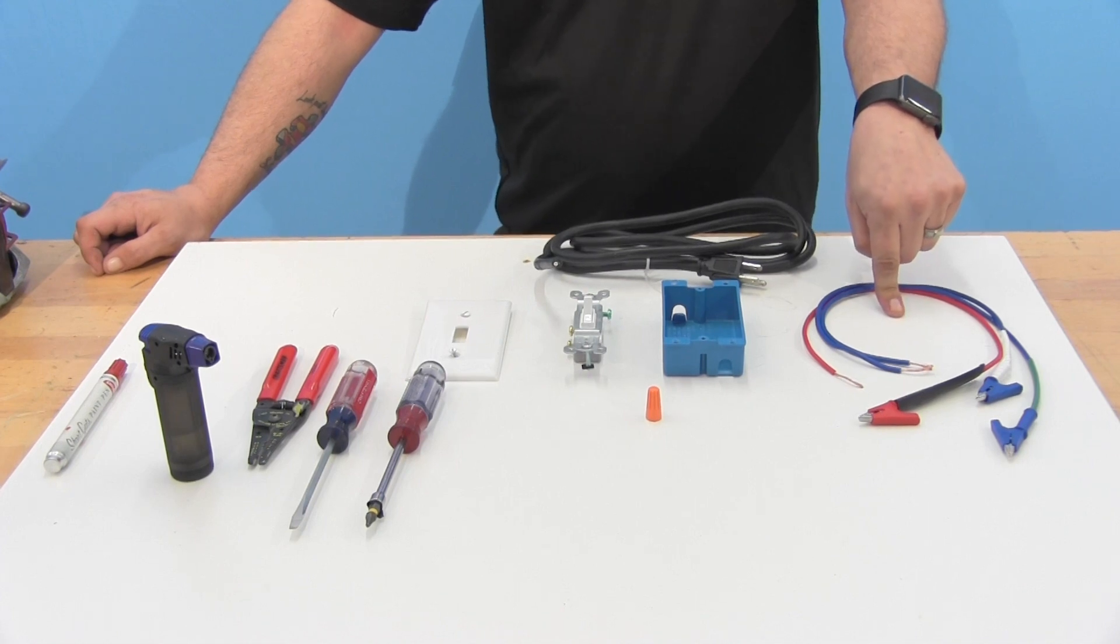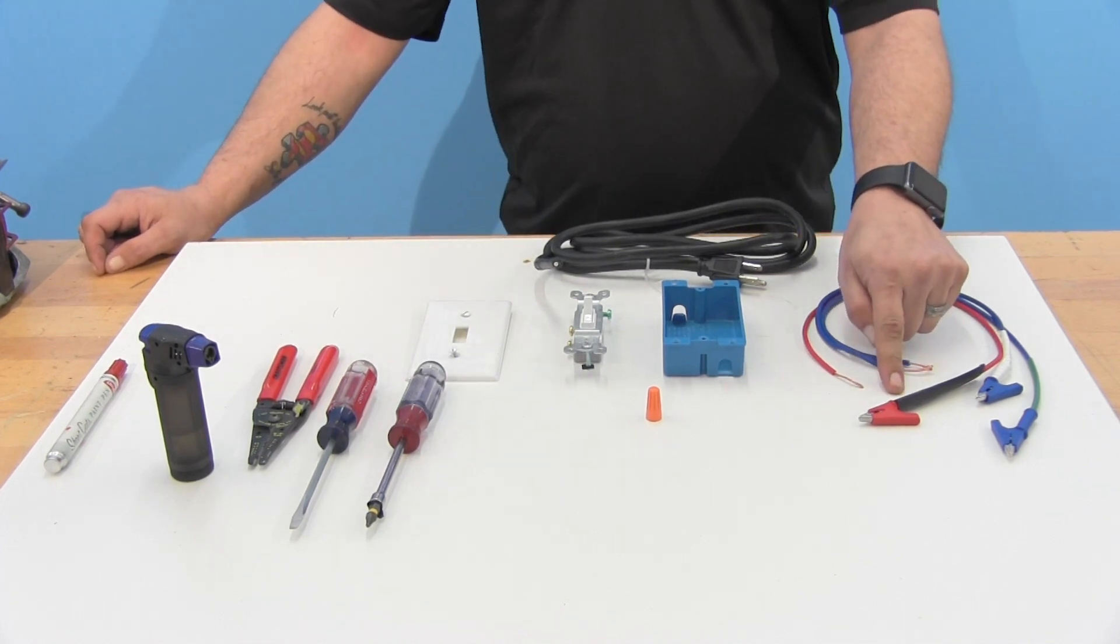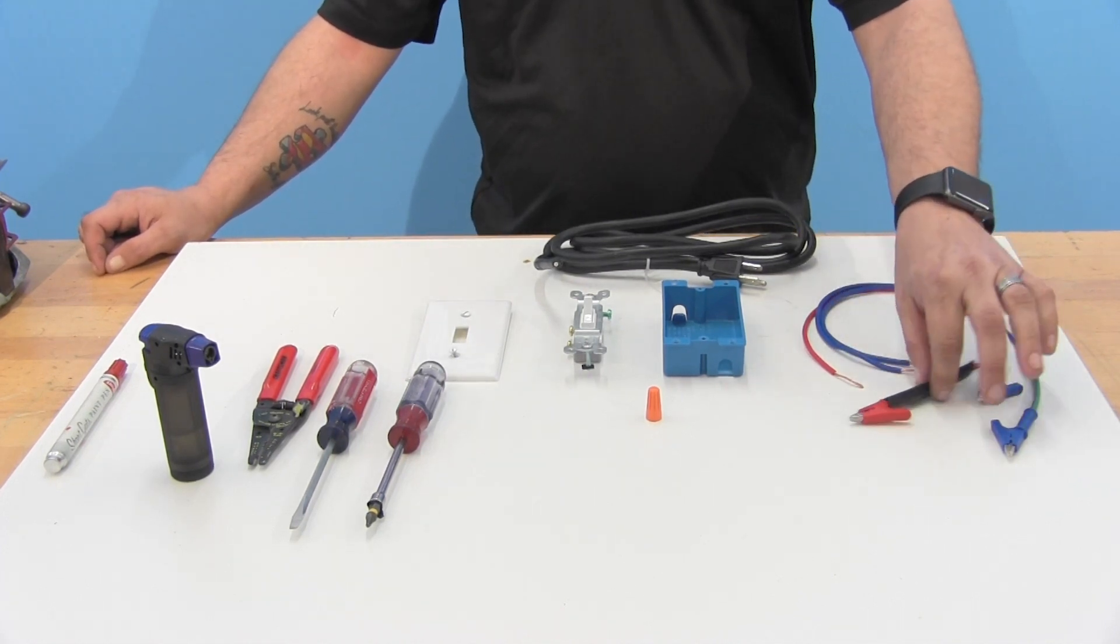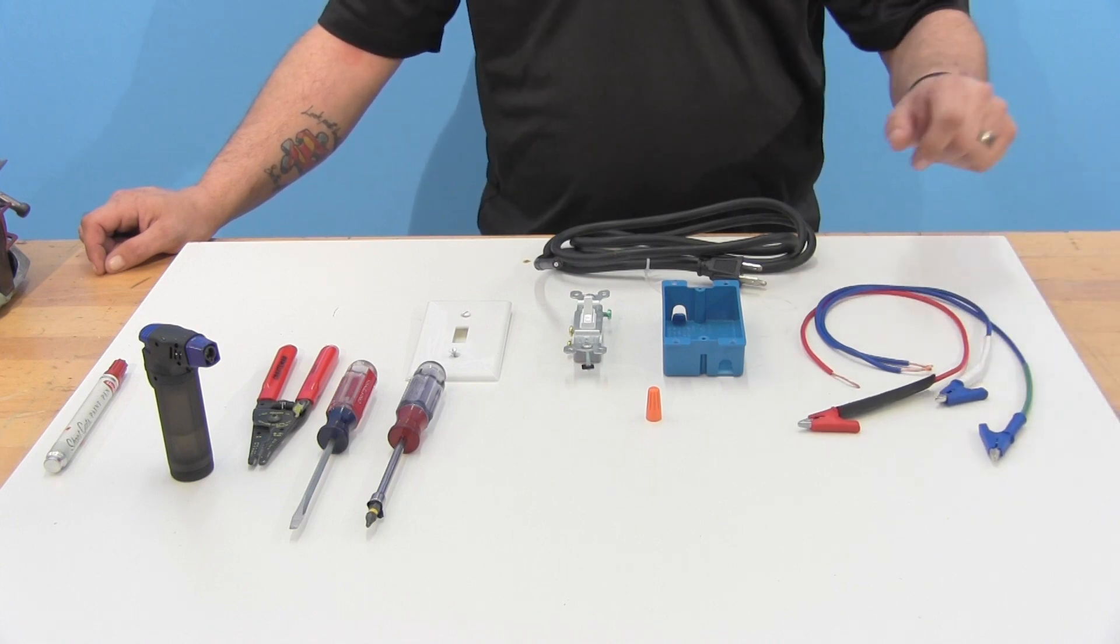We're going to start with our alligator leads here, which we're going to indicate the colors by using heat shrink. So we have our line neutral and we have our ground there.